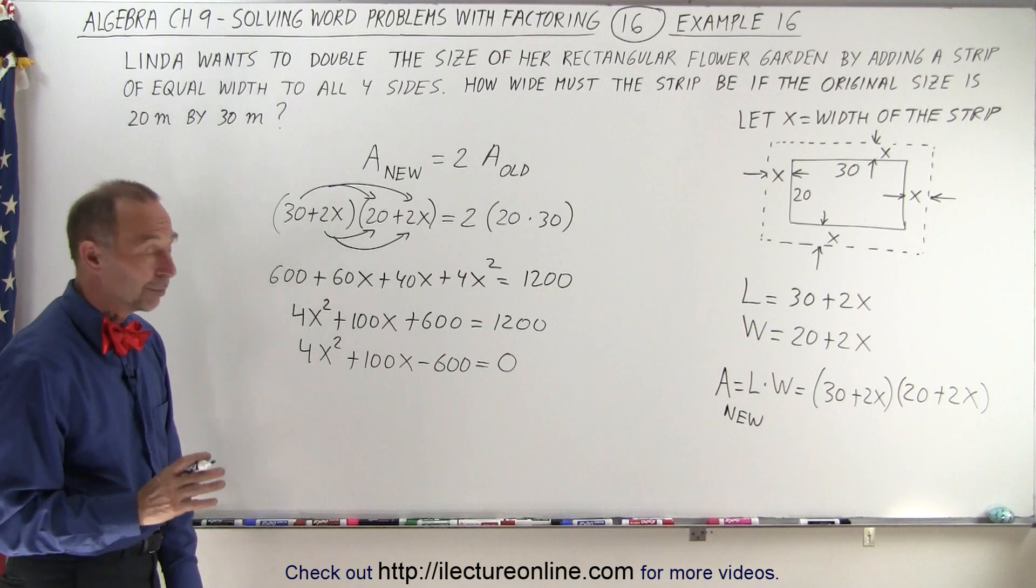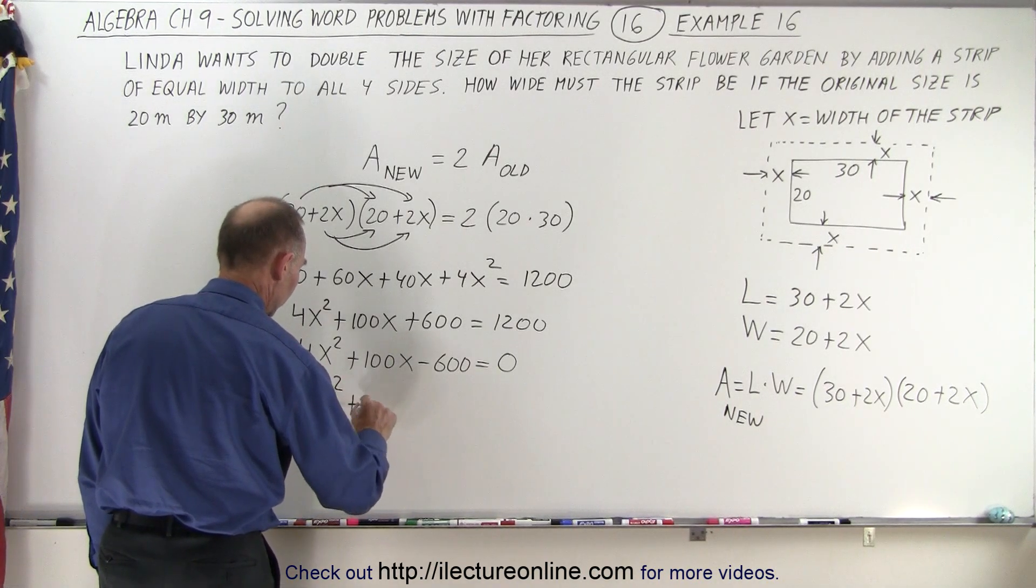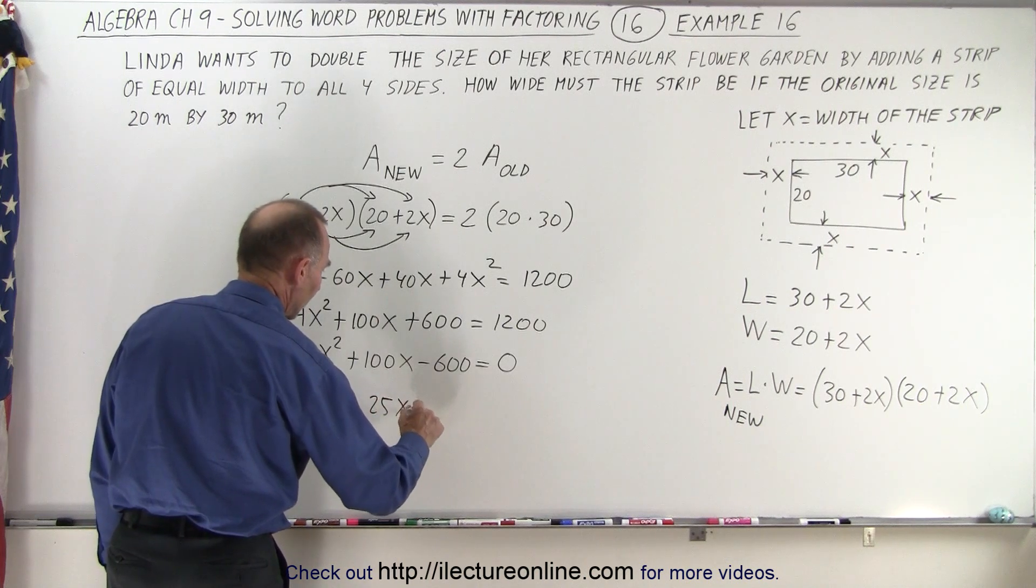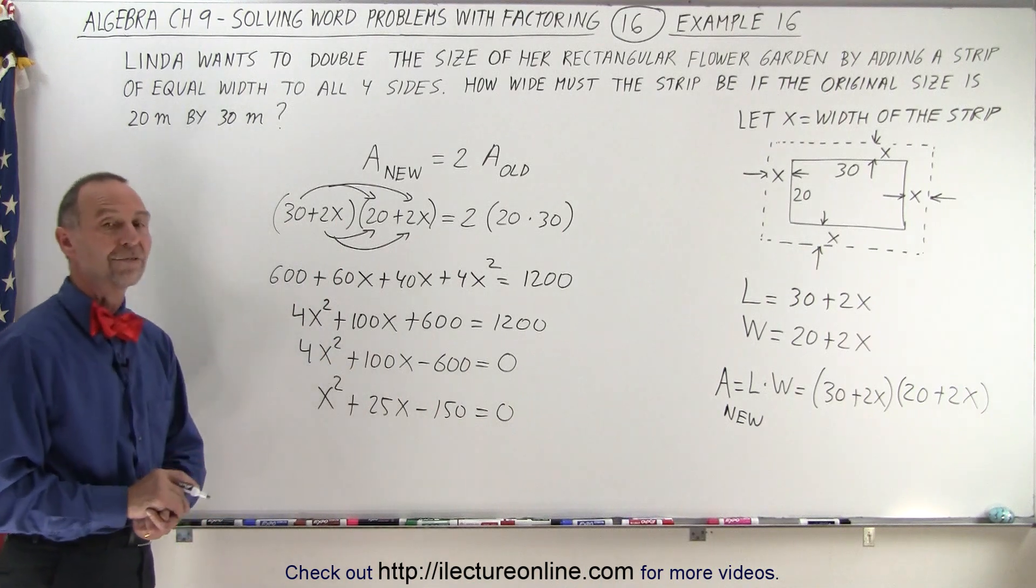And notice we can divide both sides by 4. So we get x squared plus 25x minus 150 equals zero. And that we have to factor.